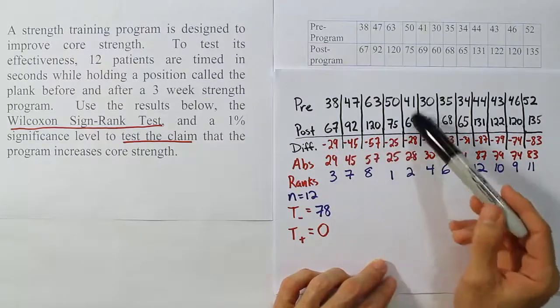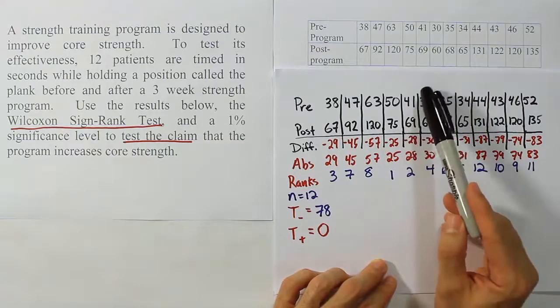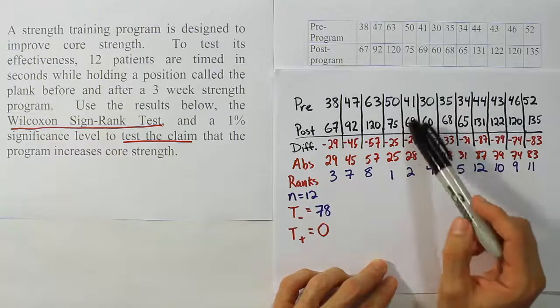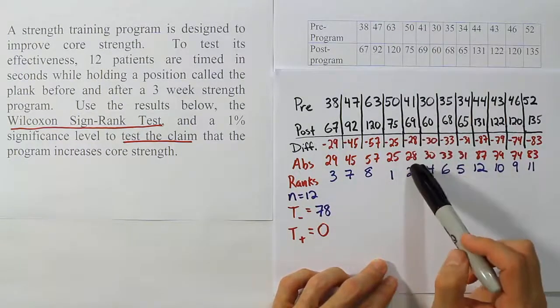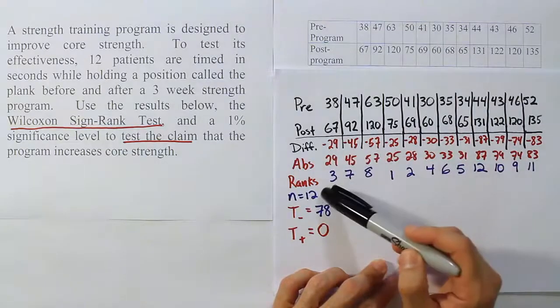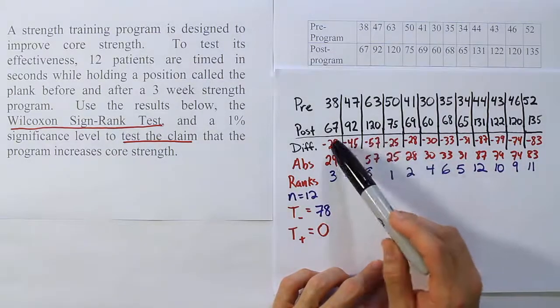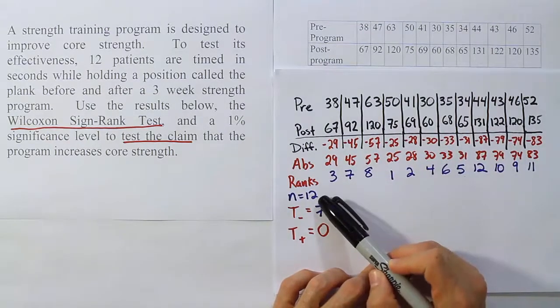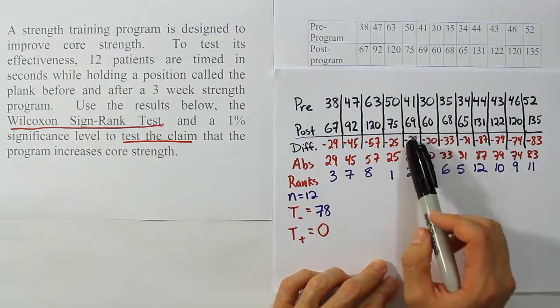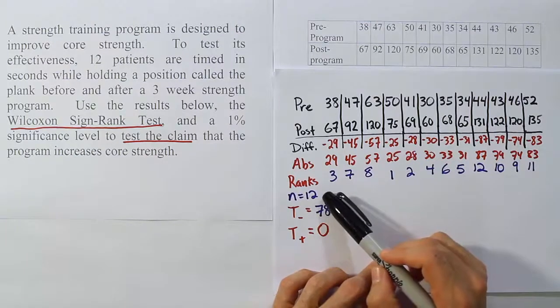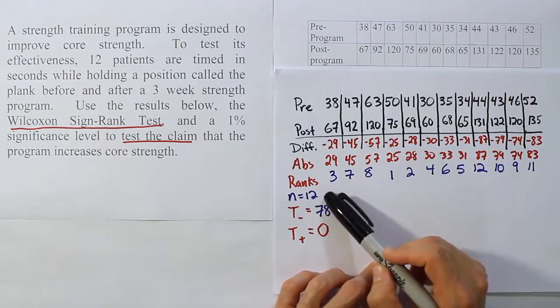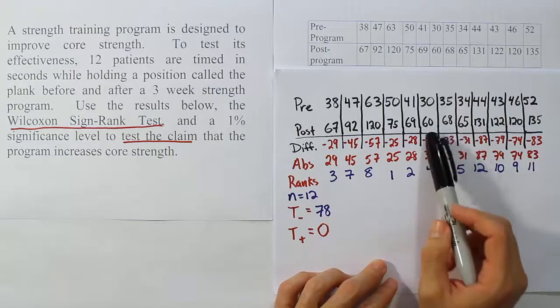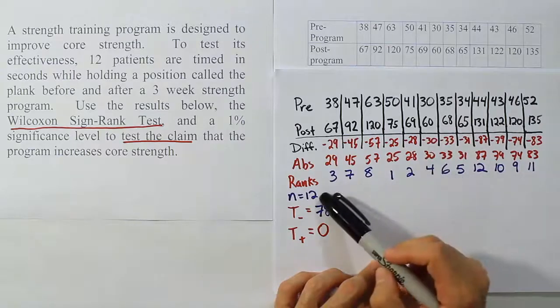Now, sometimes when you do subtraction, you'll get a zero because there's going to be two numbers that are the same in this column. If that should happen to you, you have to discard that data value. You have to throw it out as if it didn't exist, and that means that your number of differences will not be what it looks like here. So here we have 1, 2, 3, 4, 5, 6, 7, 8, 9, 10, 11, 12. We have 12 differences. That's where this n comes from. Well, if we had to throw one of them out because the difference was 0, then we'd only have n equals 11, so we reduce this n. That's going to become important when we go to get our critical value from the table. We'll have to look it up by a sample size, and so we want to make sure that if we have a 0, we throw out the data value and reduce the n accordingly.